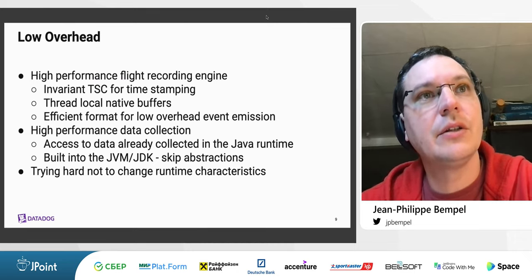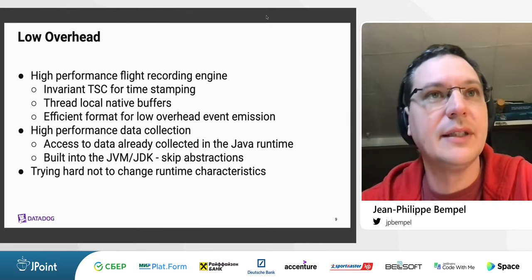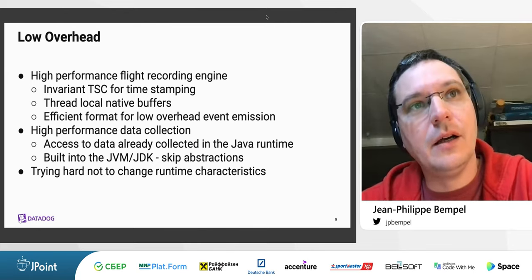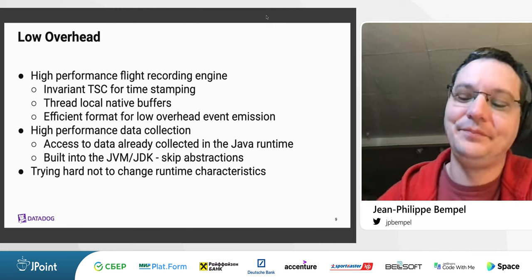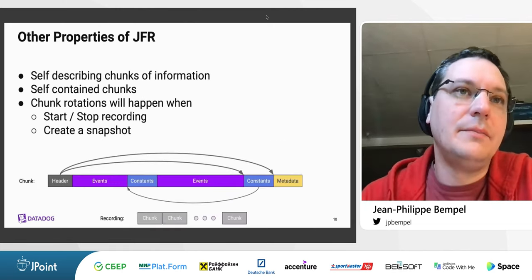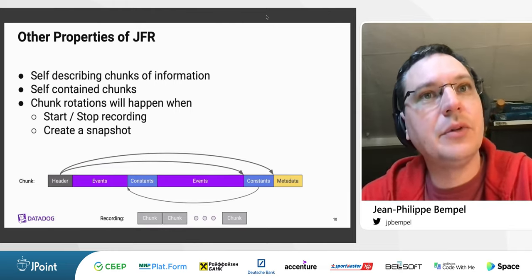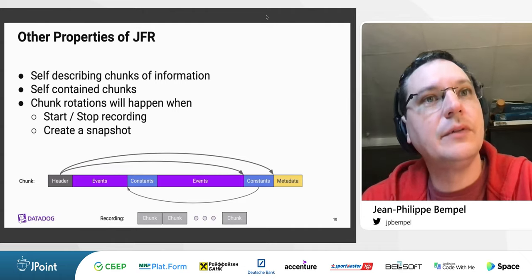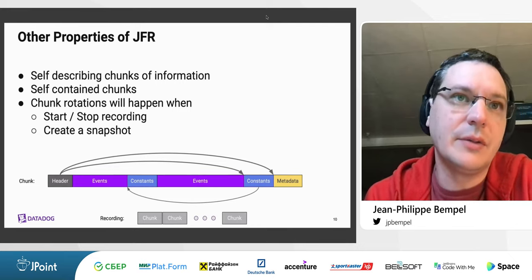JFR tries hard not to change the runtime characteristics of the application. For example, naively implementing allocation profiling would likely undo scalarization optimizations as well as escape analysis, making your GC behavior look very different. The JFR allocation profiler avoids this problem. Another interesting property of JFR is that the file format is self-describing — the recording contains a special event with metadata describing the layout of events and the types involved, so the parser can readily use it without any need to update parsing code just because new events have been added.